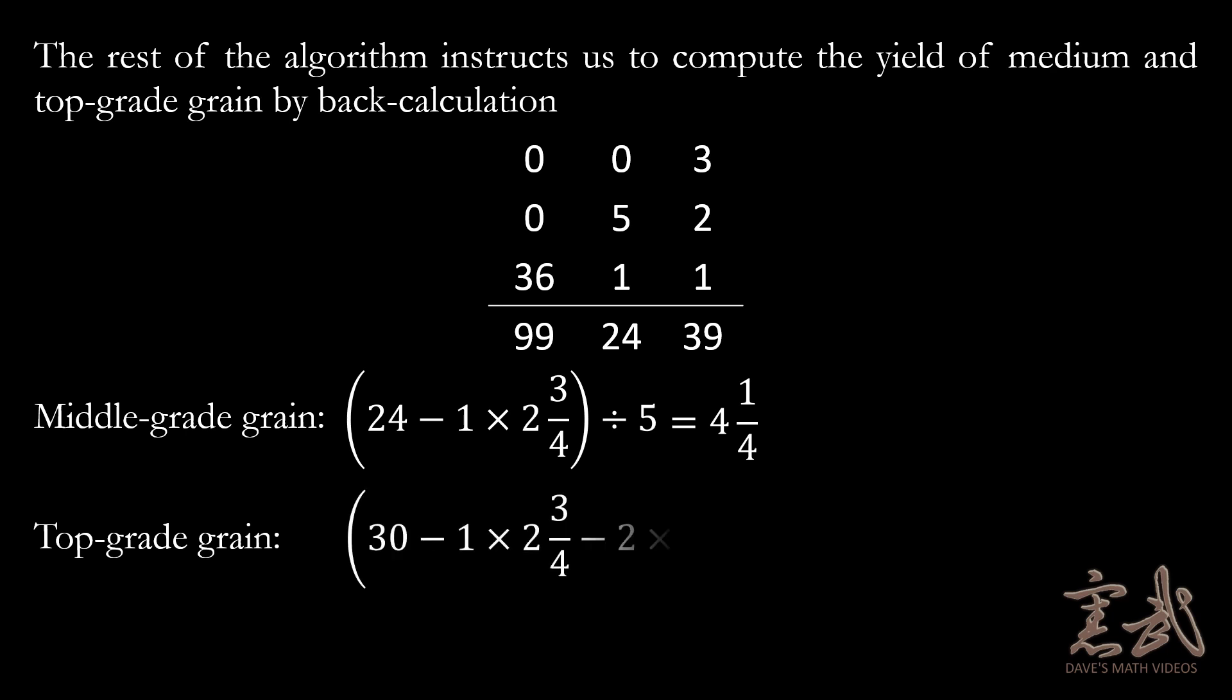For the top grade grain, we would use these same values, and we would have thirty-nine minus one times two and three-quarters minus two times four and a quarter divided by three, which gives us nine and a quarter for the yield of the top grade grain.